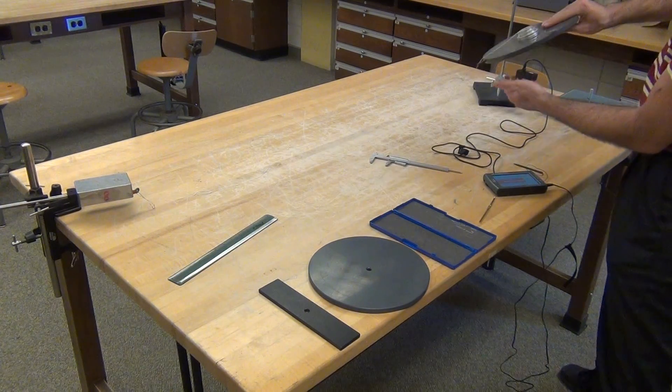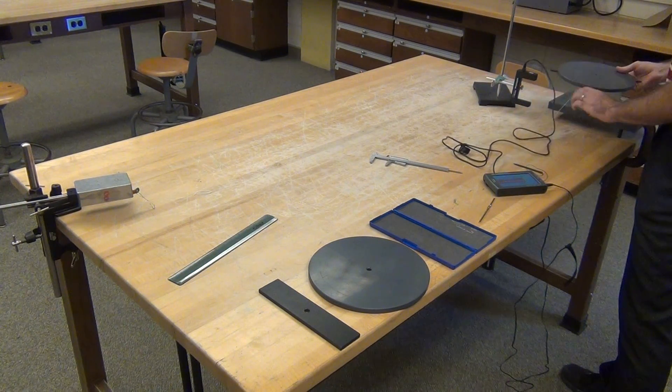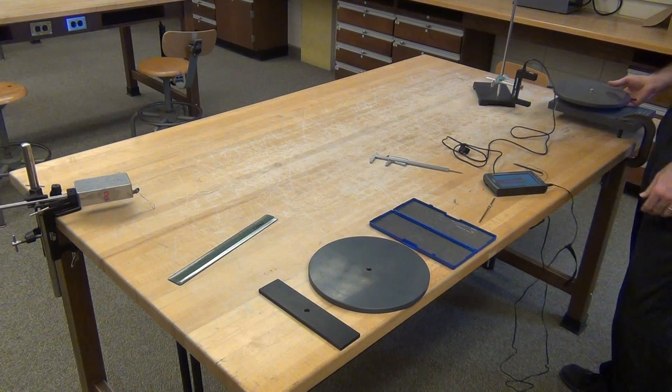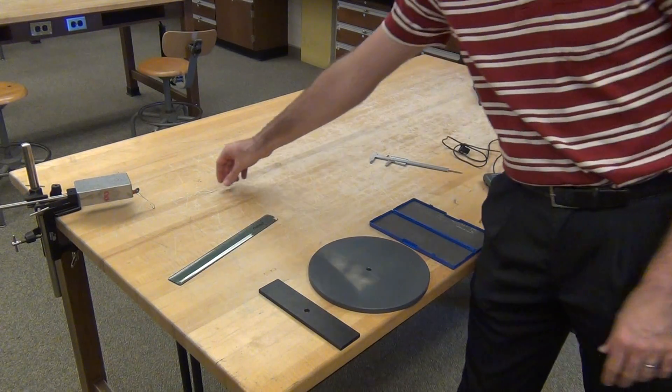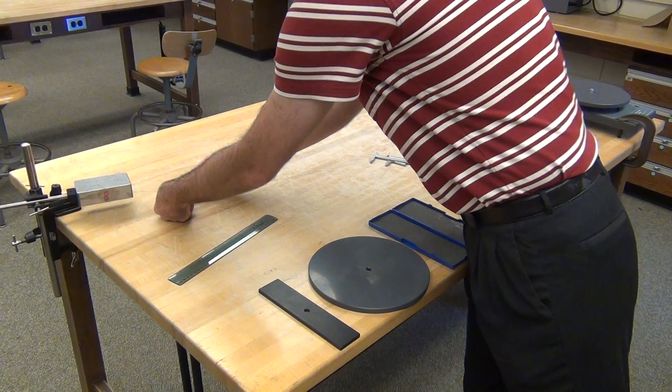Take your disk with the spools and put it spool-side down on the axle, gently placing it, and then connect the string to the torsional spring.